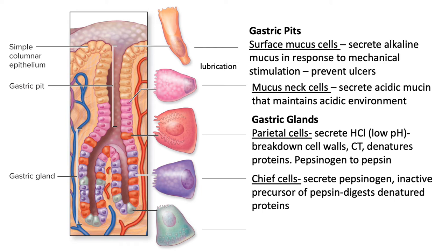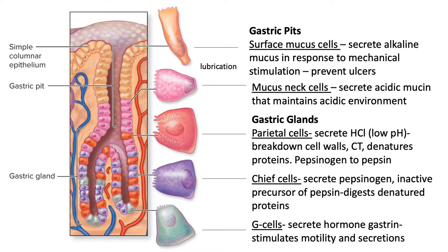Pepsin ultimately helps digest denatured proteins. Chief cells secrete granules containing pepsinogen, which are then converted into pepsin within the low pH environment. The reason pepsin isn't made directly within the chief cells is because pepsin would actively dissolve the proteins of the chief cells — so it's made in this two-step process. The last cells in the gastric glands are the G cells, which are hormone-producing cells. They secrete the hormone gastrin — hence G — into the blood, which stimulates stomach motility and secretions.